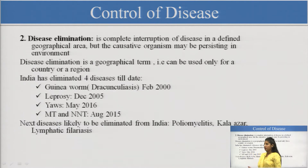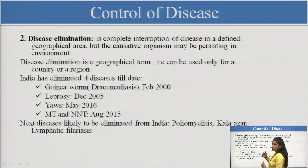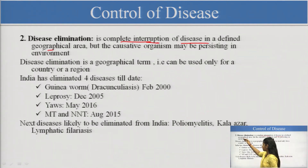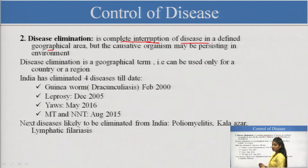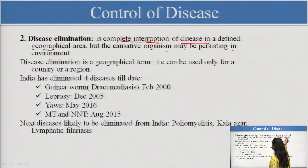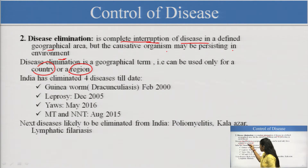The second stage is disease elimination. If we can control the disease, the next step is to eliminate it. Disease elimination is the complete interruption of a disease in a defined geographical area. In a particular area the disease is absent because we have interrupted the agent responsible for the disease, though the causative organism may still be persisting in the environment. Disease elimination is a geographical term — it can be used for a country or a region.